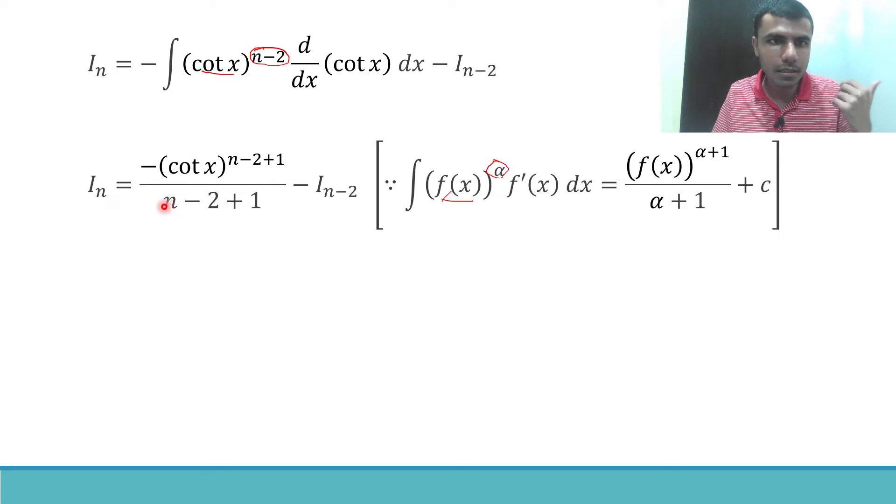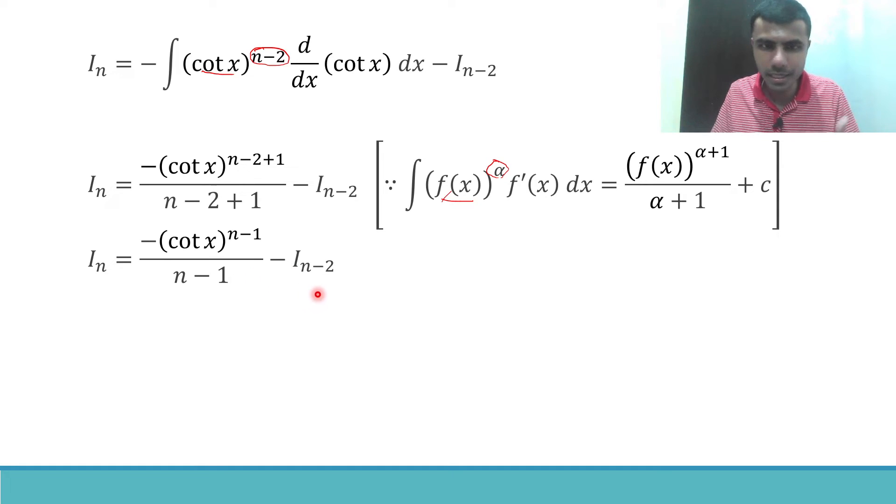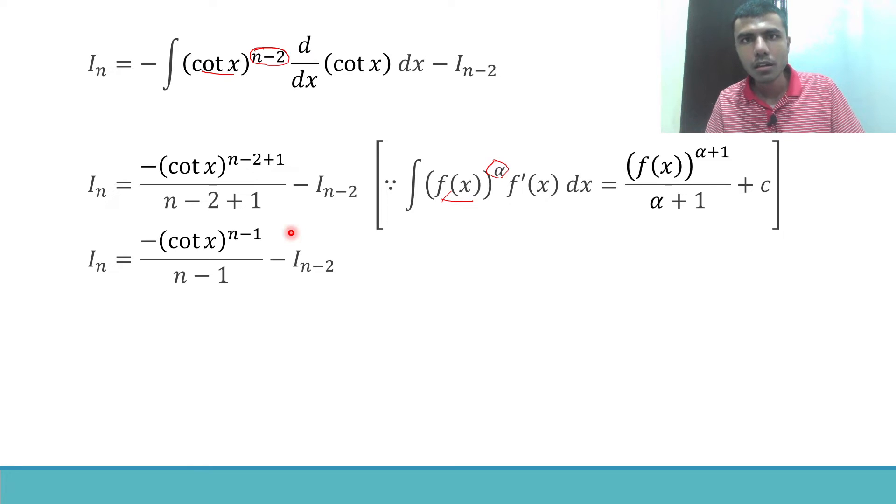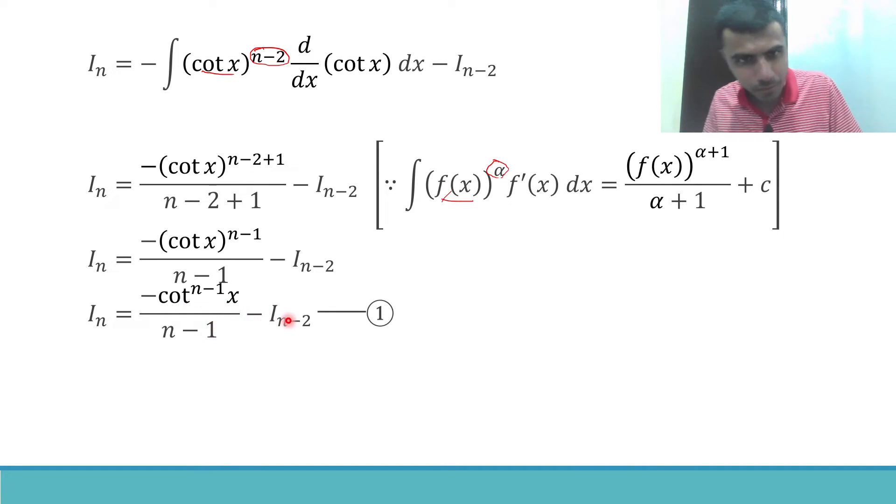What do we have in the RHS? We have in the RHS f of x power alpha plus 1 by alpha plus 1 plus an integration constant. So ultimately I would get, the minus is there, I would get f of x power alpha plus 1. So I have cot x power alpha is n minus 2 plus 1 by n minus 2 plus 1 minus I_(n-2). What is n minus 2 plus 1? Minus 2 plus 1 is minus 1. So ultimately I am left out with cot x power n minus 1. Minus cot x power n minus 1 by n minus 1 minus I_(n-2). In the textbook they have written cot power n minus 1 x, so minus cot power n minus 1 x by n minus 1 minus I_(n-2).